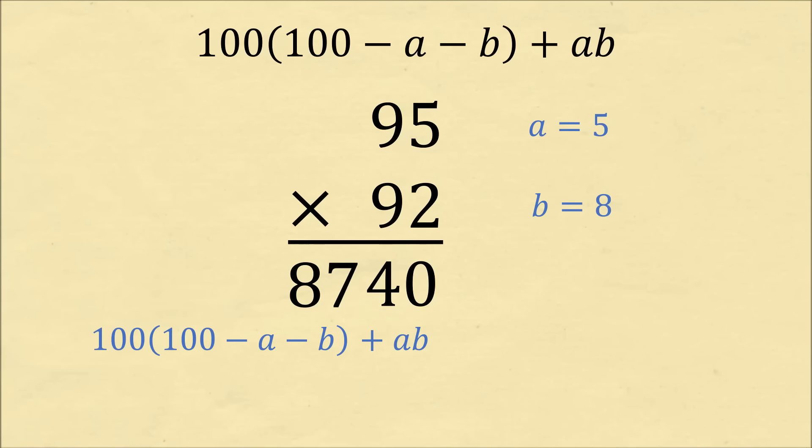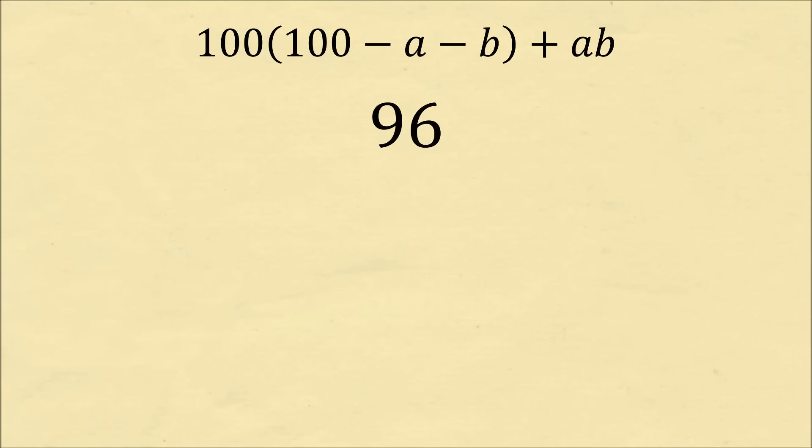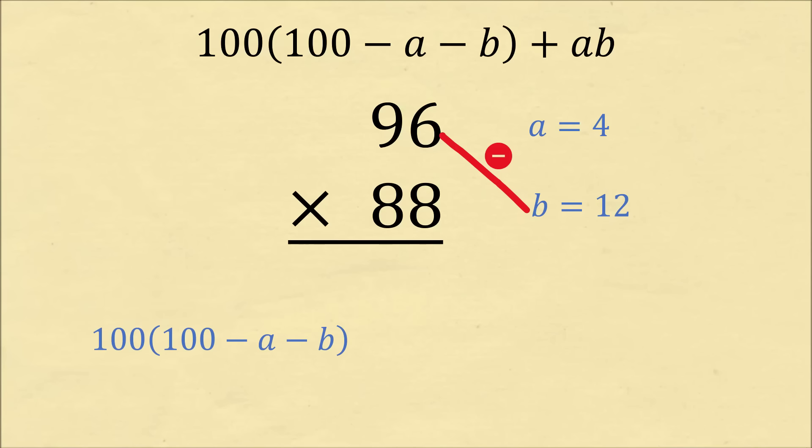But going through the mechanics of why it works actually shows us that a and b don't have to be limited to values between 0 and 10. We can actually extend this trick. Let's do another example of 96 times 88. Notice that 88 is not between 90 and 99, but we can still do the same steps. So 96 is equal to 100 minus 4, and 88 is equal to 100 minus 12. We can now cross-subtract. So we have 96 minus 12, we shift it over two decimal places, and 96 minus 12 is equal to 84. We then take the product of 4 and 12, which is equal to 48, and we just add ab. And we know that 96 times 88 is equal to 8,448. So we have extended the trick because we understood why it works.